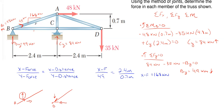Now I only have one more X force to find, which is B to C. I have 48 kilonewtons to the left and 168 kilonewtons to the right from AB. That means I need an additional 120 kilonewtons going to the left at joint B so that the 120 adds with the 48 to cancel with the 168, putting joint B in equilibrium in the horizontal direction. So joint B is now completely solved.